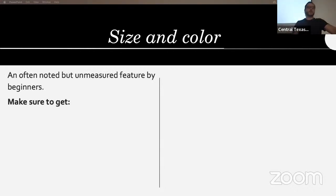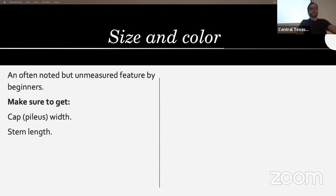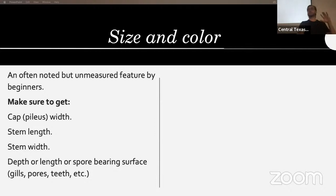When you find a mushroom you definitely want to note the size and color. Size is often noted but not usually measured by beginners, but it can be very helpful, even though some size descriptions need to be taken with a grain of salt because mushrooms can grow bigger or smaller depending on environment. You want the cap width, stem length, stem width, and depth of the spore-bearing surface — gills, pores, or teeth.